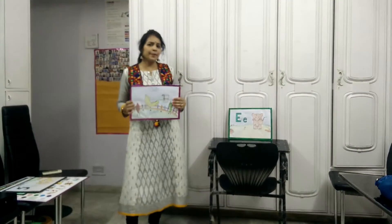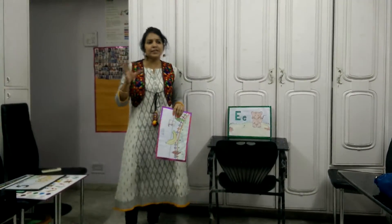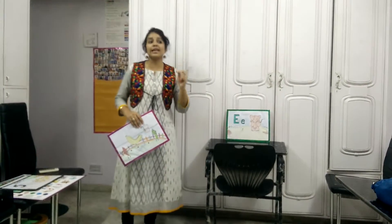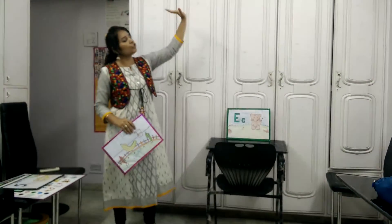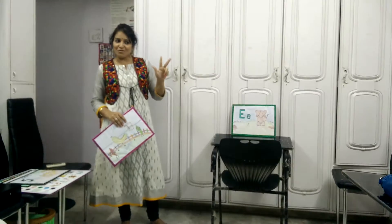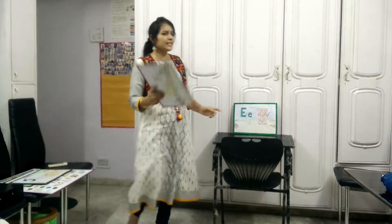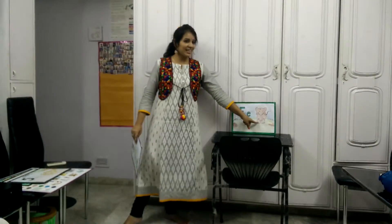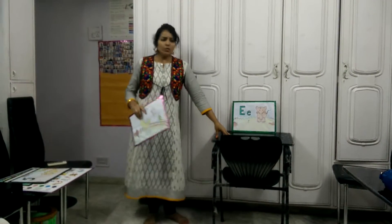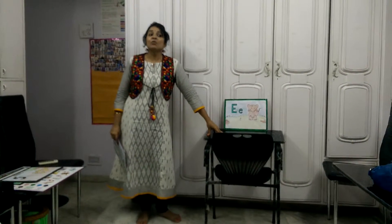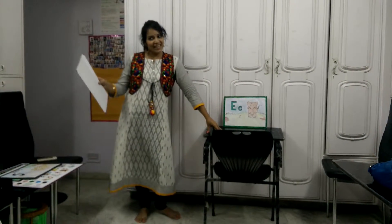Now elephant walks like a ding dong bell — from left to right, from right to left. They live in jungles far away. They come in two colors: one is gray and one is brown. Now apart from Letter E, I will also teach you about one animal which is elephant. The name of this elephant is Ellie — Ellie the Elephant, who starts with Letter E.